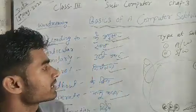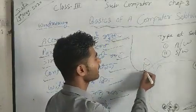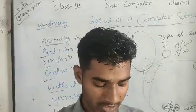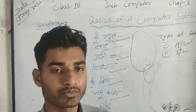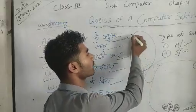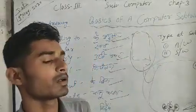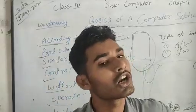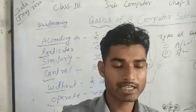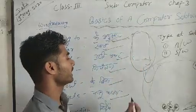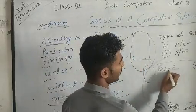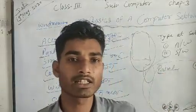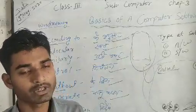For example, we use the calculator for mathematical calculations — add, subtract, multiply, and divide. In the calculator you cannot write text or letters; you can only do arithmetic calculations. Similarly, take Paint — in the Paint program you can only make drawings; you cannot write letters.